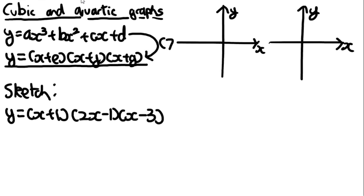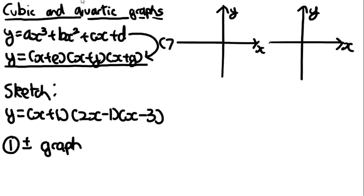To sketch a cubic, you need to know three things. The first is whether it is a positive or negative graph — the same idea as with a quadratic, though you can't call a cubic a parabola. Whether it's positive or negative depends on the coefficient of x³. If that coefficient is positive, it's a positive cubic; if negative, it's a negative graph.